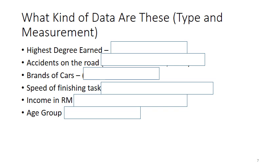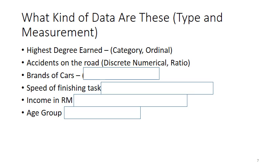Let's try this. What do you think these kinds of data types are and what are the measurements? Highest degree earned is, of course, categorical because there are categories and it's ordinal. Accidents on the road, you know that this is counted, so it's definitely discrete numerical, and there is a fixed zero point, so it's ratio. Brands of cars, you know it's categorical, and it's nominal because you have categories of brands of cars. No one is better than the other.